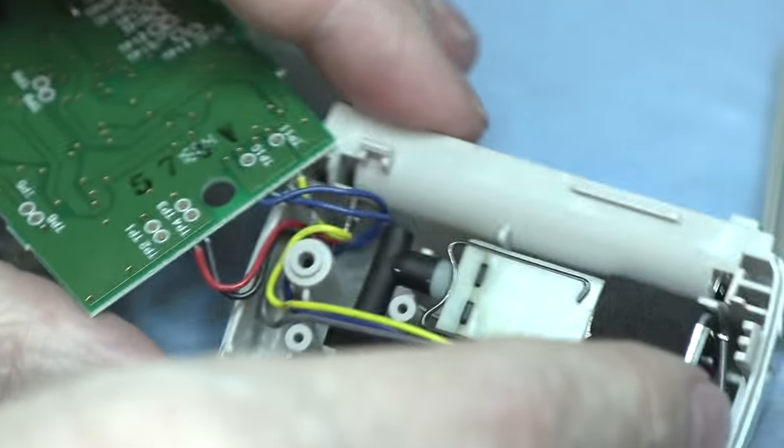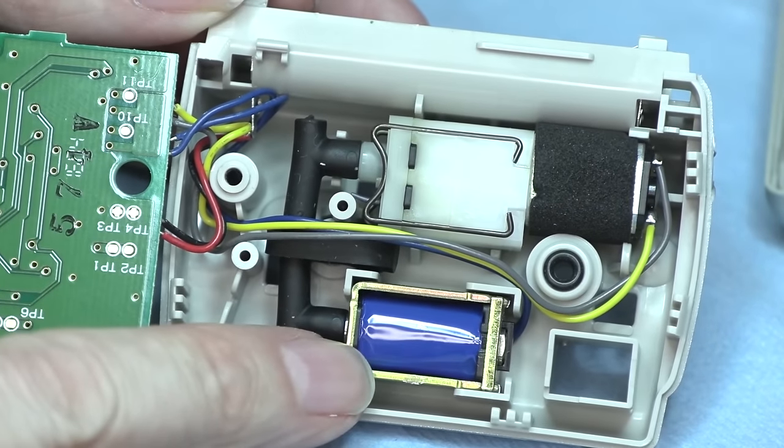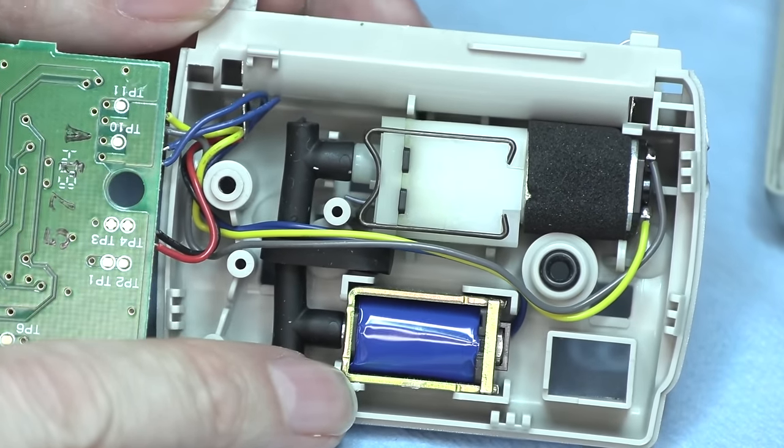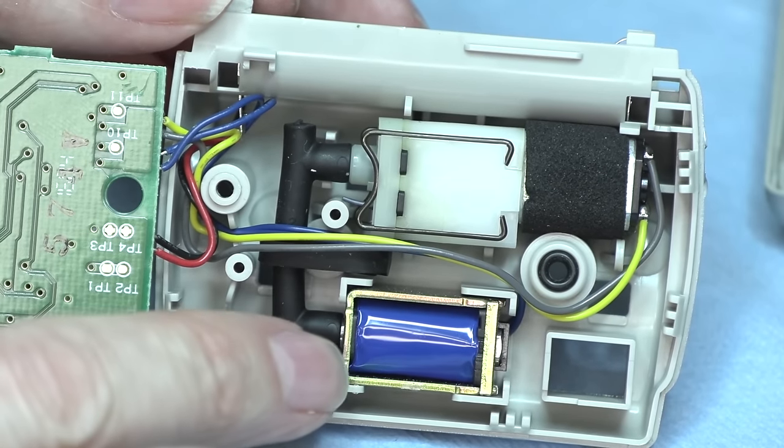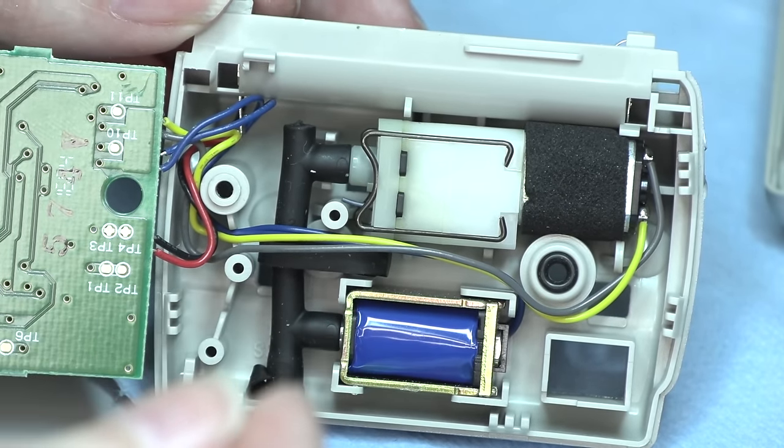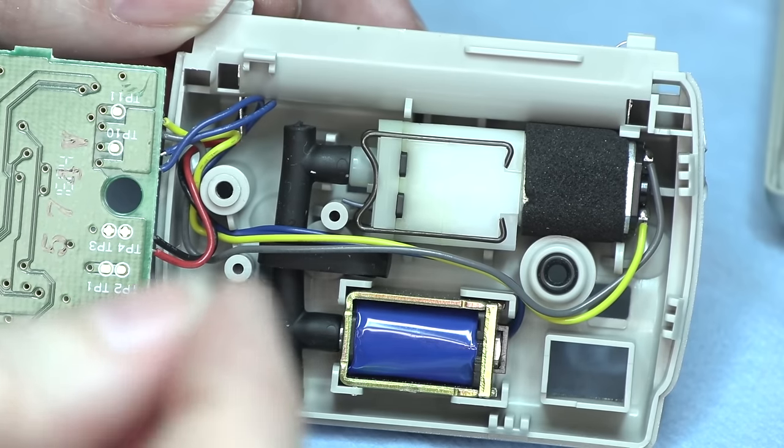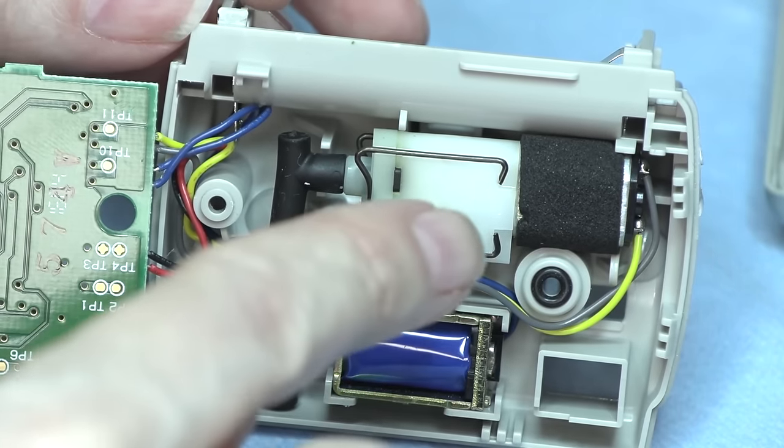And then here we go. This is where the magic happens. That looks like a little valve there. That's a solenoid. That's probably the relief valve to open and close the whole system. Would be my guess. Because it holds the pressure and then it lets the pressure out. And that looks like just a valve. And that's the pump.